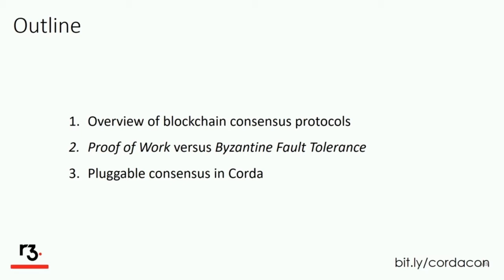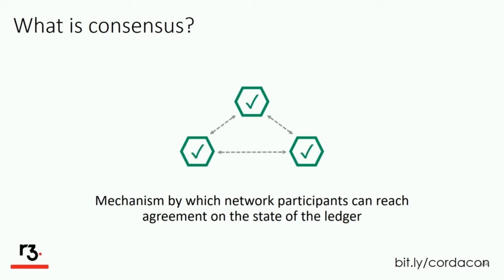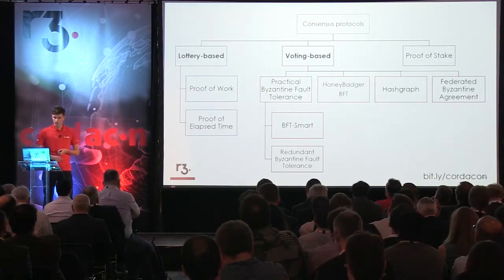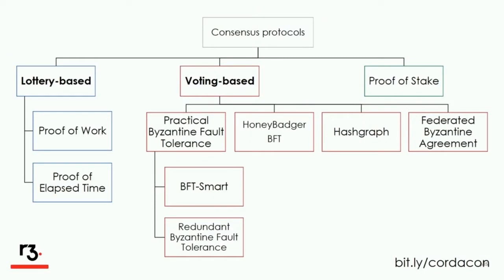Let's begin with a quick definition of what we mean by consensus. In computer science, the distributed consensus problem is a classic problem where we have multiple processes trying to reach agreement on some specific data. In blockchain, that essentially translates to the mechanism by which network participants can reach agreement on the current state of the ledger. Usually the consensus protocol used is one of the key design aspects of a blockchain platform.